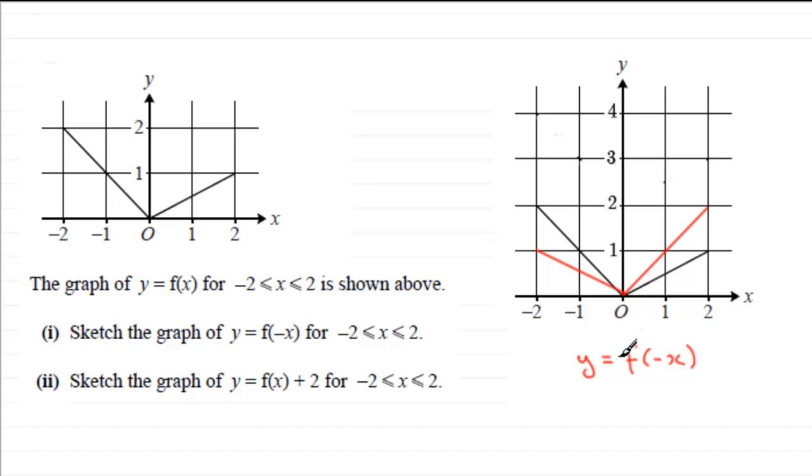If you had a negative out the front, if it was y equals negative f of x, that would have been a reflection in the x axis just whilst we're here. So you should be familiar with these type of transformations.